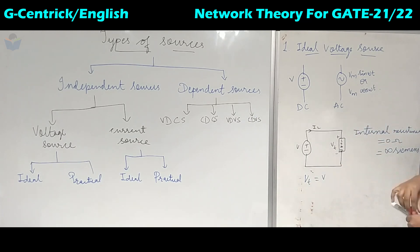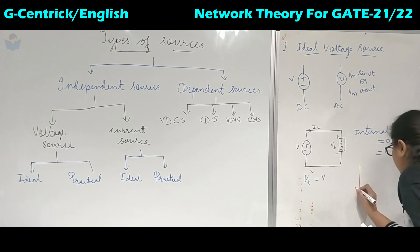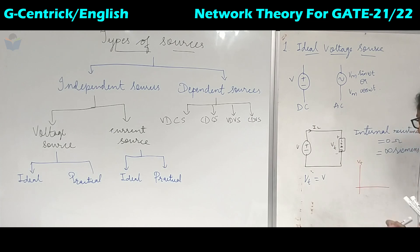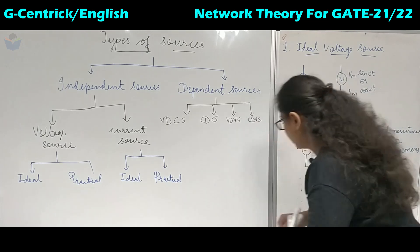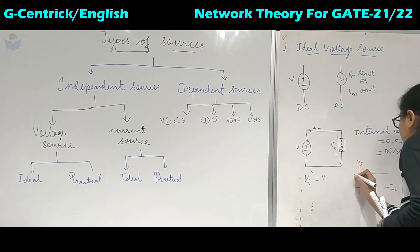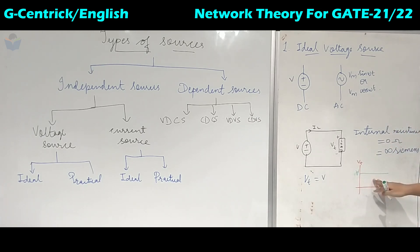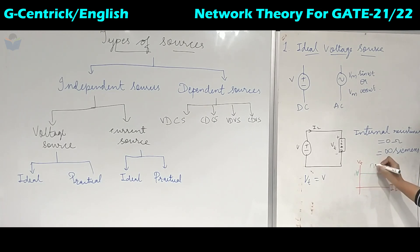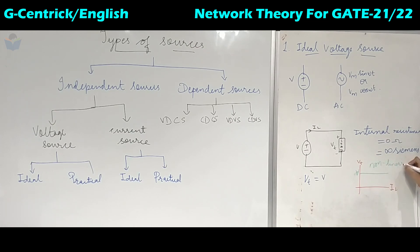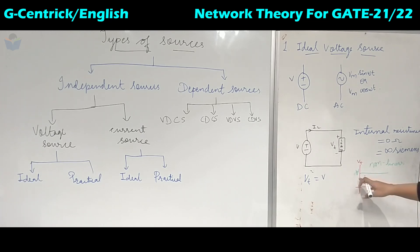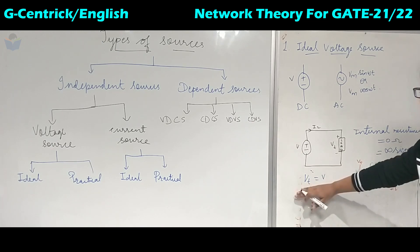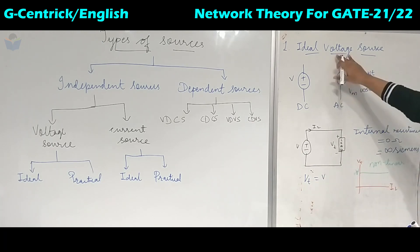If we draw the graph with Vt on the y-axis and load current on the x-axis, we get a straight horizontal line. From this graph we can see it is non-linear — it does not obey Ohm's law, because Ohm's law is only valid for linear-type sources. This straight line at voltage V is the terminal voltage, and this is about the ideal voltage source.